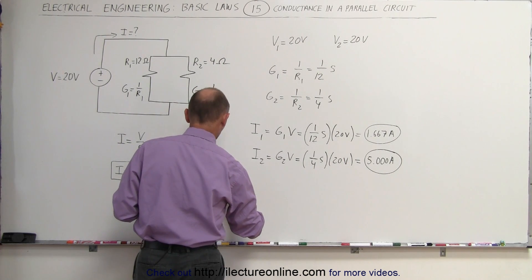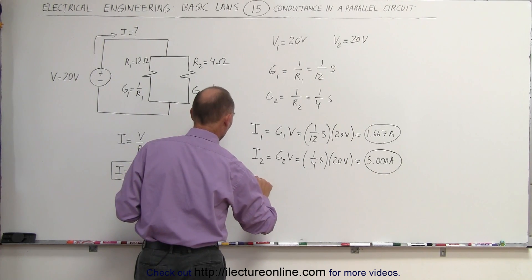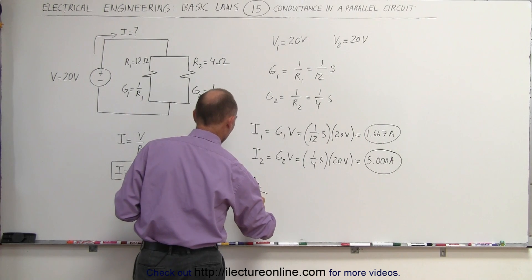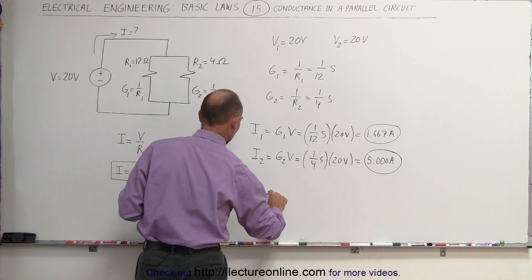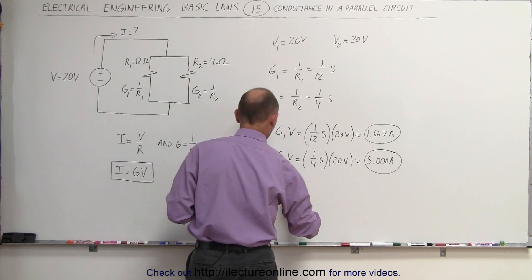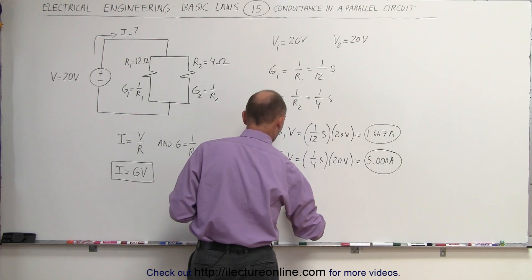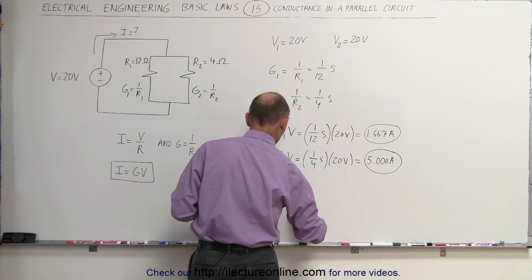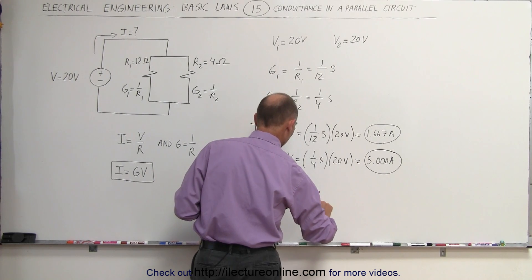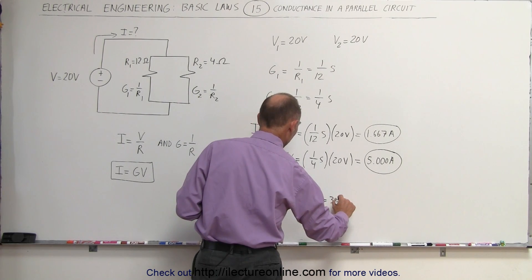And R total is equal to the product over the sum, R1 times R2 divided by R1 plus R2. This is equal to 12 times 4 divided by 12 plus 4, which is equal to 48 divided by 16, which is equal to 3 ohms.